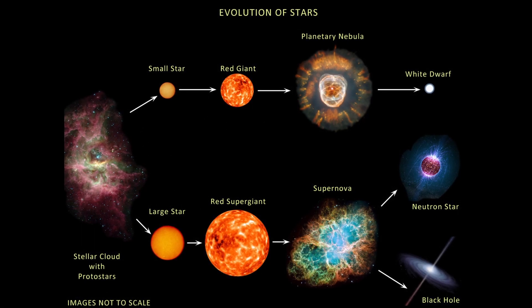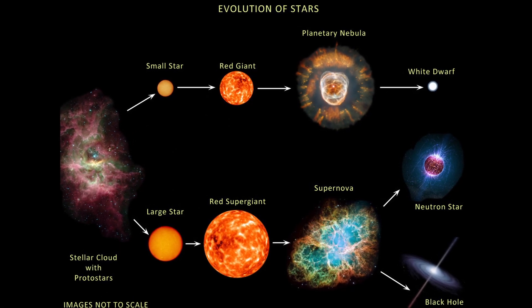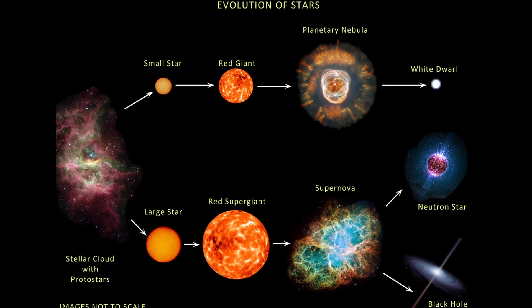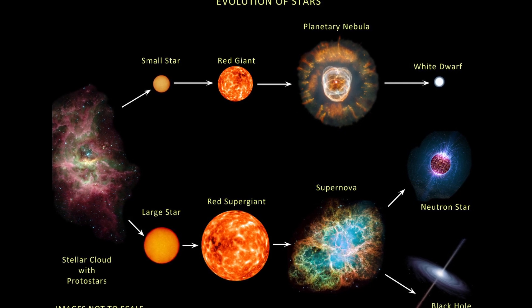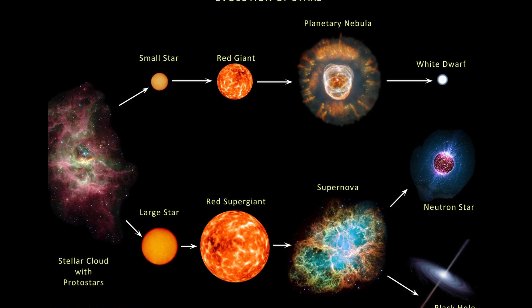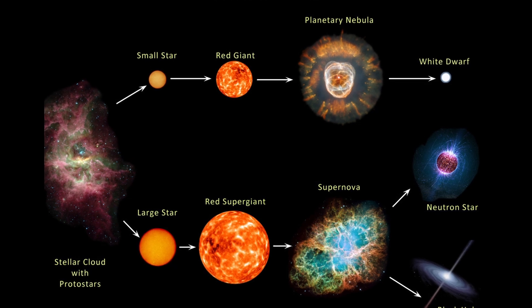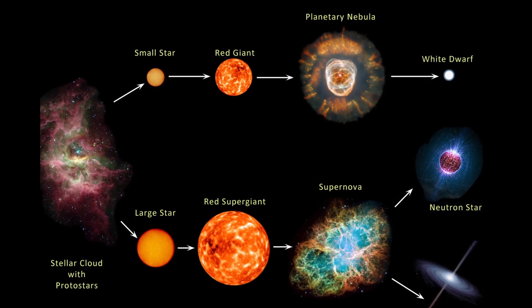As the model unfolded, the narrative of stellar collapse came to life. Oppenheimer and Snyder's calculations revealed a mesmerizing dance between gravity and matter, a star's final journey towards a point of no return, a singularity.